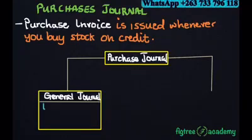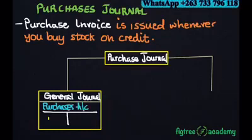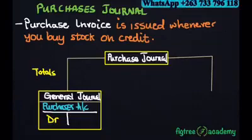This is the entry for the Purchases Journal. After recording a transaction in the Purchases Journal, we post to the ledger using the double entry system. We must have two accounts we post to from the Purchases Journal.